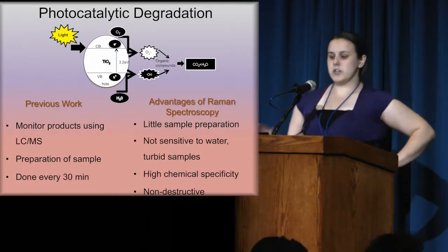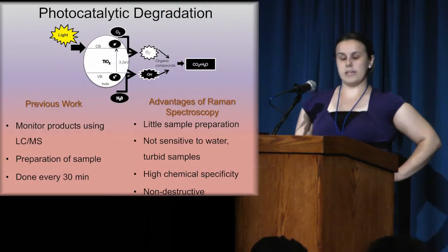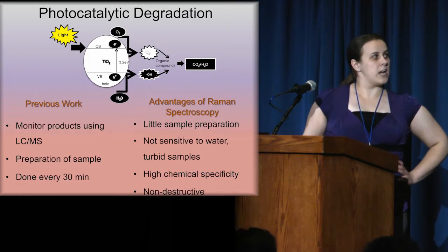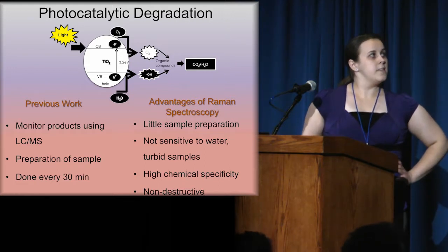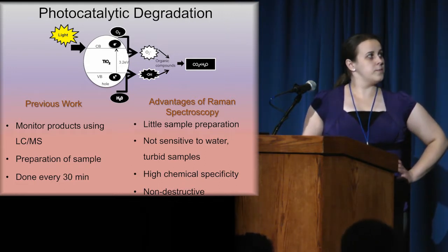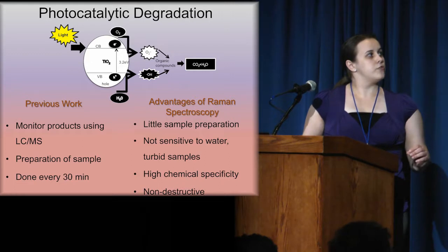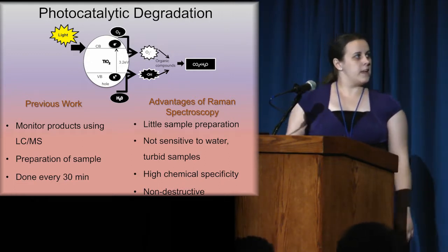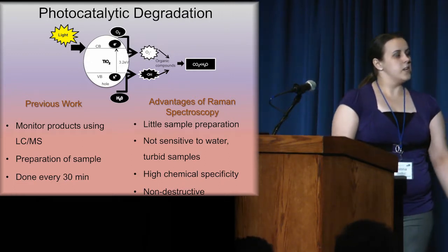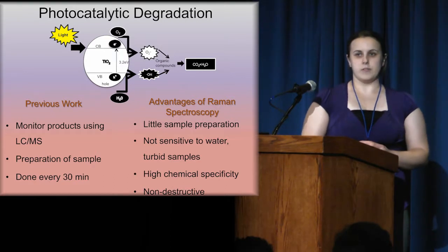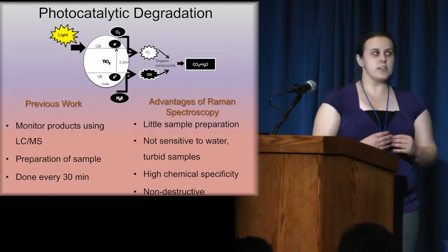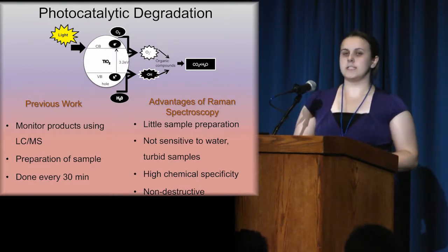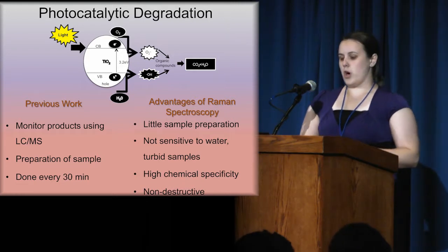The steps involved in photocatalytic degradation are: light comes in and reacts with titanium dioxide, which leads to the formation of reactive species that react with oxygen and water, which then react with the organic compounds, leading to simpler molecules such as carbon dioxide and water.